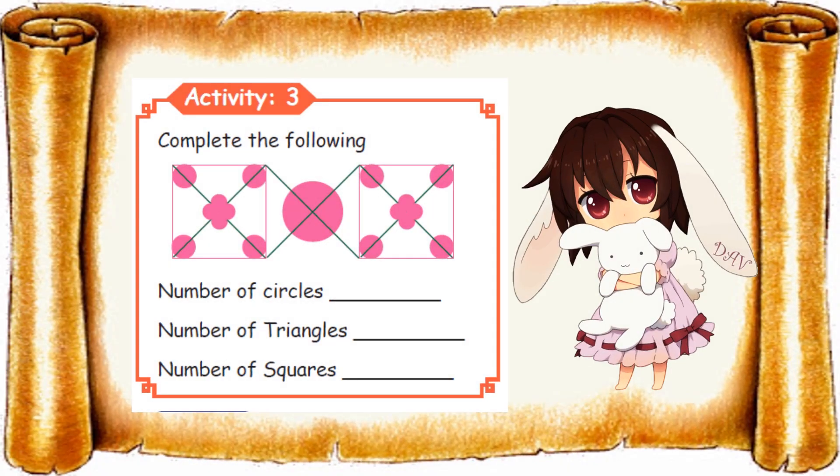Activity 3. Complete the following. From this figure we'll find the number of circles, triangles, and squares. Let's start counting circles. Join with me: 1, 2, 3, then 4. Left side and right side look the same. The same set of 4 circles will be on the right side: 5, 6, 7, and 8. One more in the center, so 9. Number of circles equals 9.